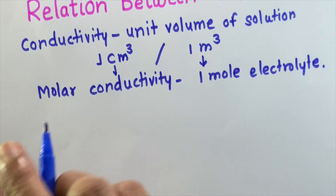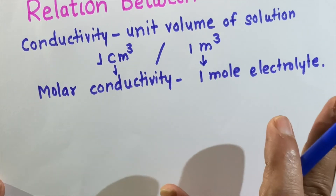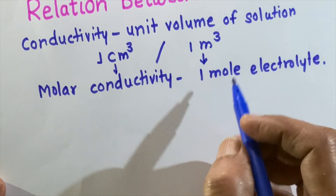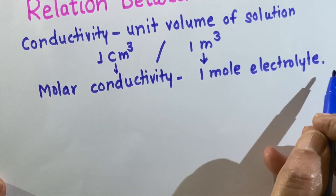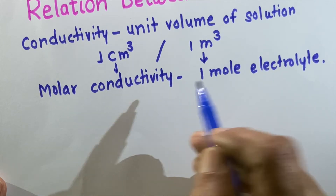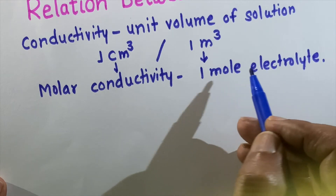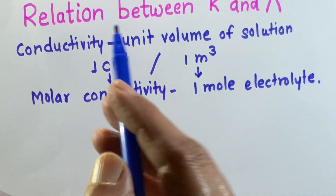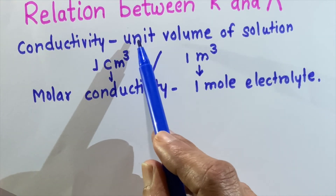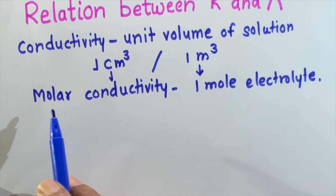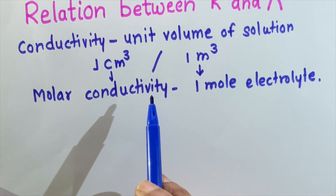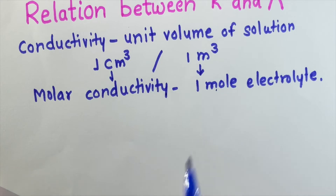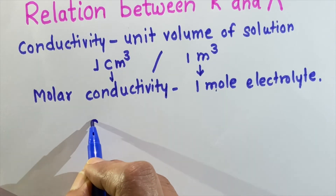Whatever the volume of the solution, the amount of electrolyte must be 1 mole. If 1 mole of electrolyte gives a large number of ions, molar conductivity will be more; if fewer ions, molar conductivity will be less. In summary: conductivity is the conductance of unit volume of the solution, while molar conductivity is the conductance produced by 1 mole of electrolyte.